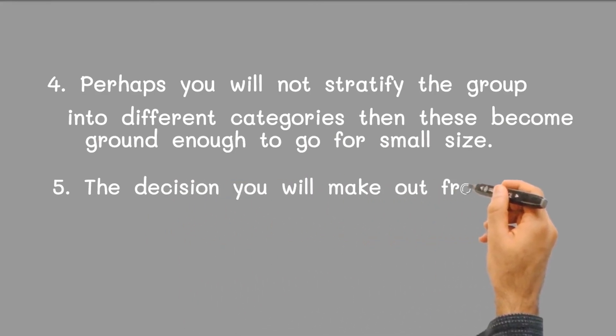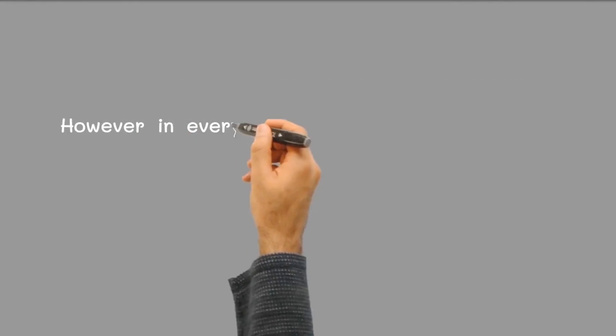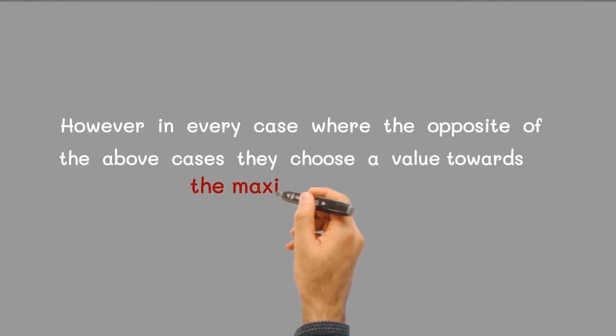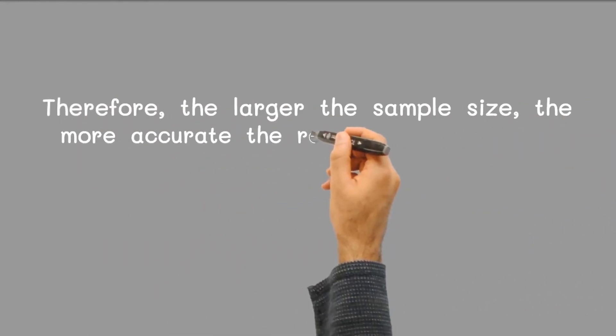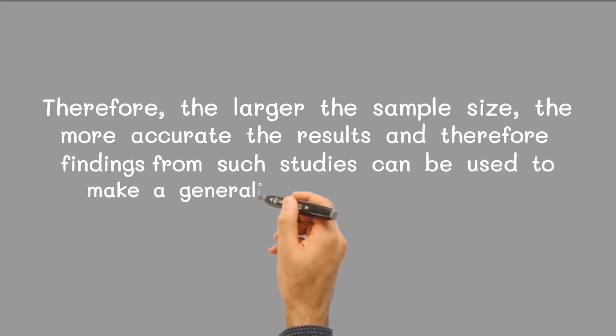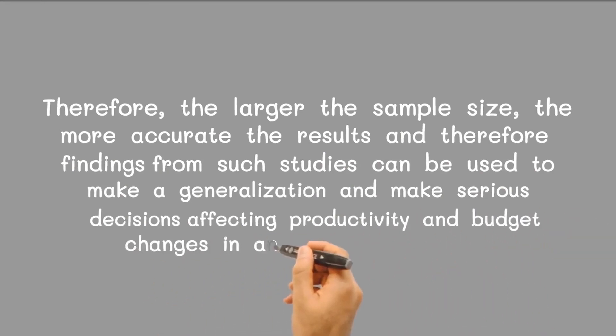Five, the decision you will make from the result does not have serious consequences. However, in every case where the opposite of the above case is true, choose a value towards the maximum of 1000. Therefore, the larger the sample size, the more accurate the results, and findings from such studies can be used to make generalizations and make serious decisions affecting productivity and budget changes in an organization.